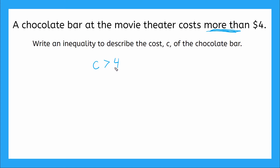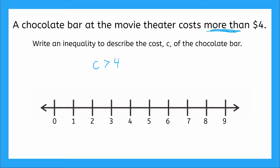Now let's plot our solution set. We'll get out our number line here. If I want to plot the inequality C is greater than 4, I'll go find the 4 on my number line and draw a circle there. Now, am I going to fill this circle in or leave it open? It's just greater than 4, so 4 is not included in my solution set — I have an open circle. Then I'm going to draw my arrow in the direction of greater than 4. So my solution set does not include 4; it's bigger than 4 and goes all the way up.